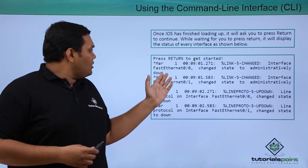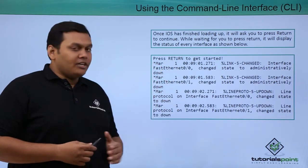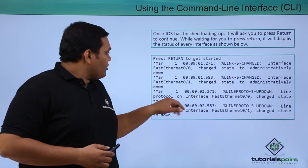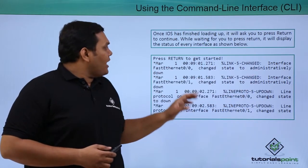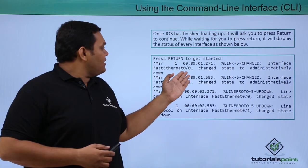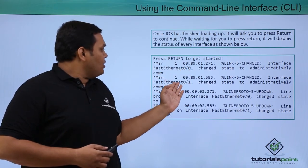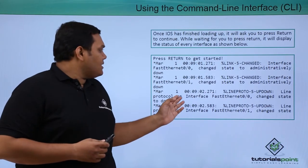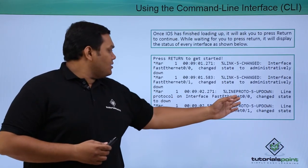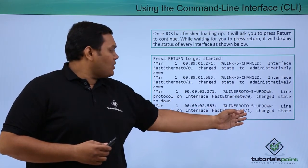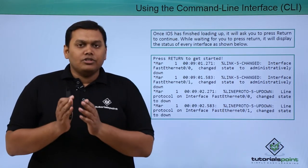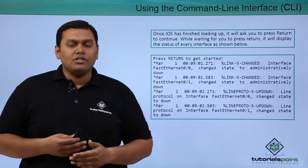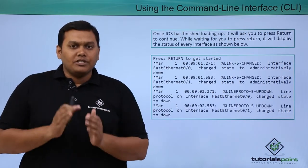You can see that there are 1, 2, 3, and 4 interfaces. Out of 4, 2 are down and 2 are administratively up. You can also see that Ethernet 0/0 and 0/1 are active, while interfaces 0/0 and 0/1 are down. This is the interface information shown after the loading process while waiting for the return button to be pressed.